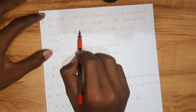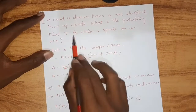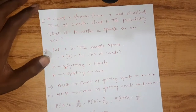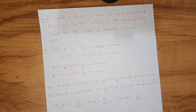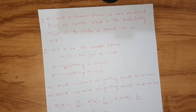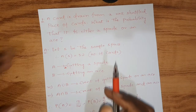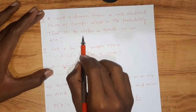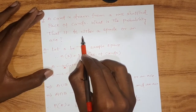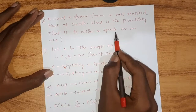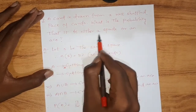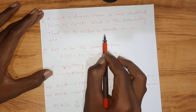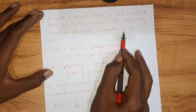The first problem is: a card is drawn from a well-shuffled pack of cards. What is the probability that it is either a spade or an ace? We can identify this as an addition theorem problem because the question involves two events — it asks for the probability of getting either a spade or an ace. If you see 'either' or 'or' in the question, it indicates addition theorem.